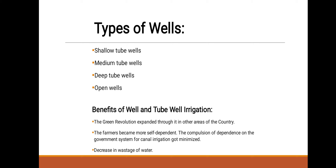What are the benefits of well and tube well irrigation? The green revolution expanded through it in other areas of the country. The farmers become more self-dependent. There is a decrease in wastage of water. The compulsion of dependence on the government system for canal irrigation got minimized.